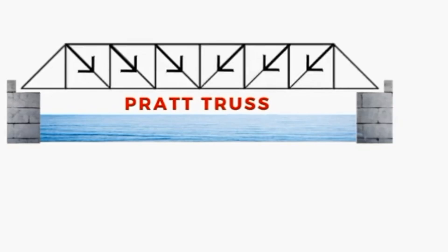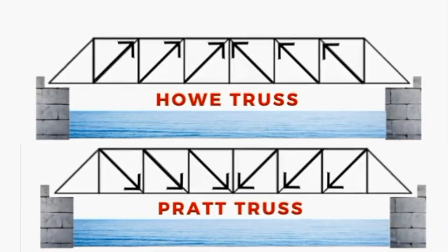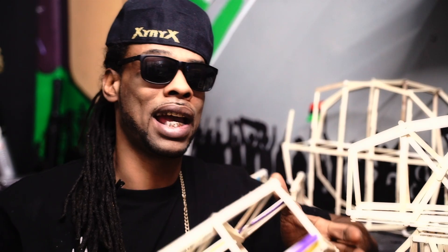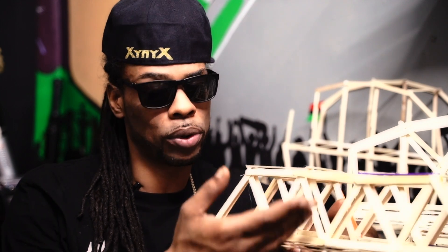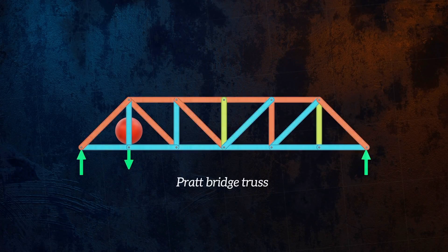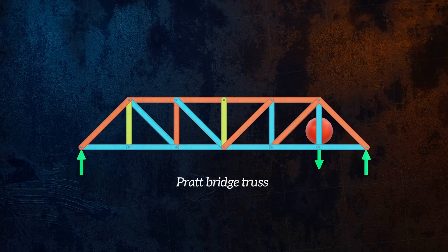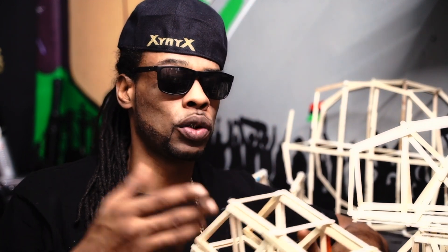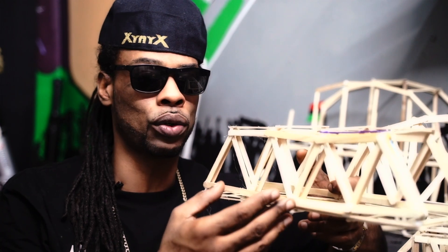Pratt Truss bridges are designed to direct the forces toward the center of the bridge. The opposite is the Howe Truss Bridge, which does the complete opposite — the forces are directed outward. When analyzing your bridge, you want to consider which members and joints are experiencing compression and which are experiencing tension. You have the method of members and method of joints — most people go with the method of joints. How your bridge is designed to handle compression and tension forces — that's the beauty of being an engineer.